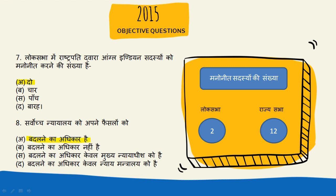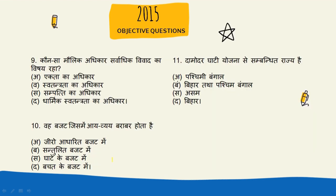Next question: So-sa Maulik Adhikar sarvadanik vivad ka vishay raha. To iska jo sahi answer hai — Sampatti Adhikar. Sampatti Adhikar filhal ab Maulik Adhikaron ki soochi se bahar bhi ho gaya hai. Is se Maulik Adhikaron ki kul sankhya chah hai.